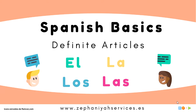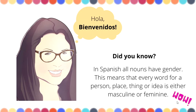Today we are continuing with Spanish basics and we are going to go over what is called definite articles. Did you know in Spanish all nouns have gender? This means that every word for a person, place, thing, or idea is either masculine or feminine.